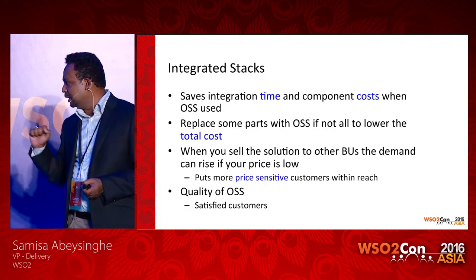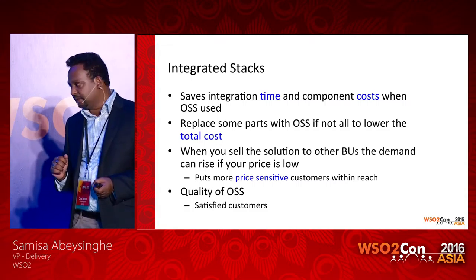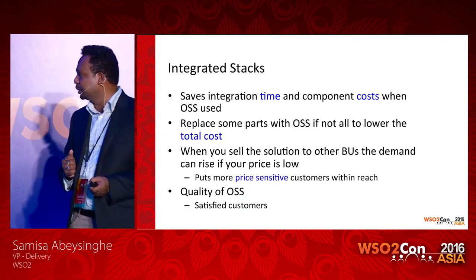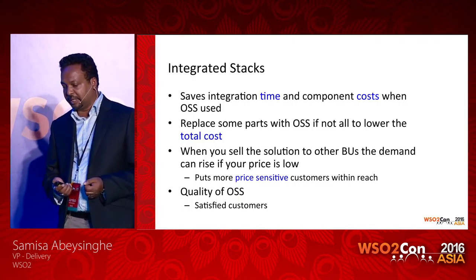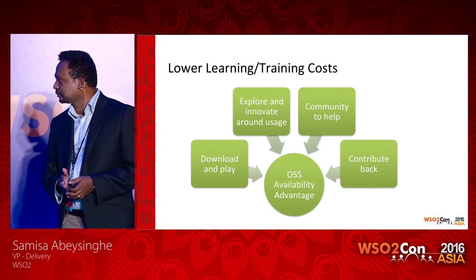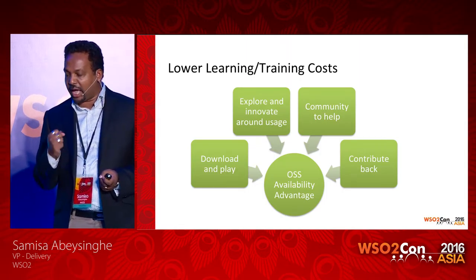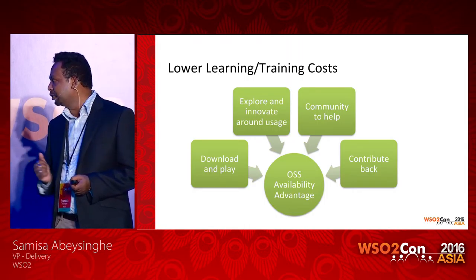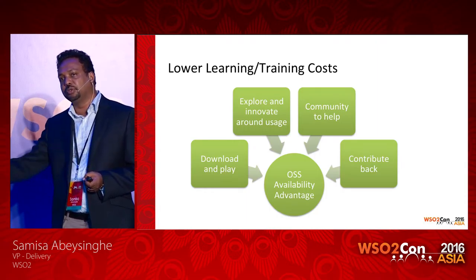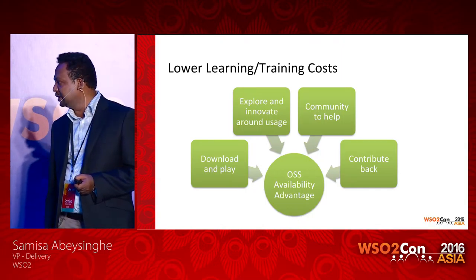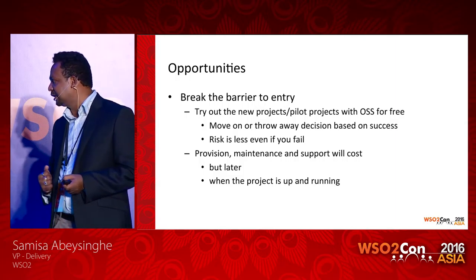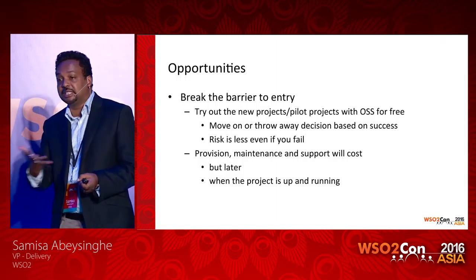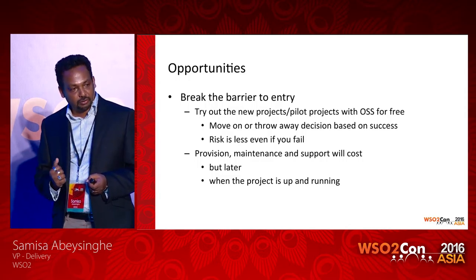The open source availability advantage is that you can download and play, help build the community, contribute back if you have the bandwidth to do so, and also explore and innovate. Given that you have the ability to access it freely, it breaks the barrier to entry and reduces the risk of failing because you can give it a try and have confidence. The cost will rise later if you go for support services, but that is later — when the technology is proven to work. Once proven, it is easier to convince management that this is worth an investment rather than not knowing at the beginning and wasting money.